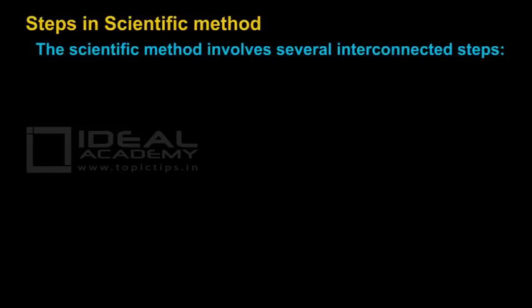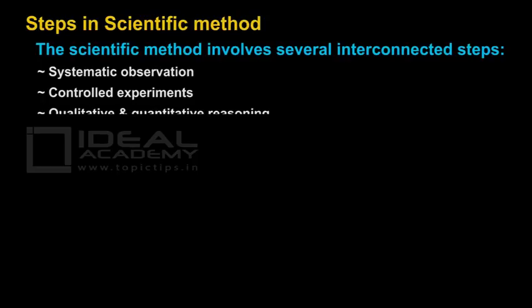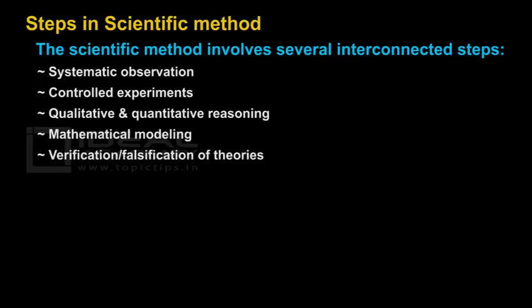A scientist, when developing a theory or law, goes through a series of steps and finally concludes. These series of steps constitute the scientific methods. The steps in scientific methods are: first, systematic observation; second, controlled experiments; third, qualitative and quantitative reasoning; next, mathematical modeling; and the final one is verification and falsification of theories.